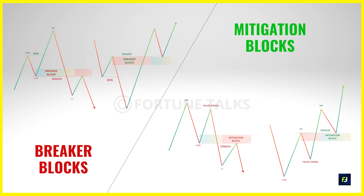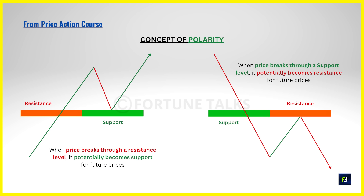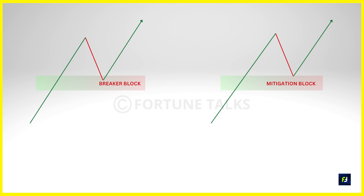Breaker Blocks and Mitigation Blocks are reference areas on charts where you can potentially find a trade opportunity. The Breaker Block and Mitigation Block concepts are almost the same, but their formation pattern is different. The general definition states that a Breaker Block or a Mitigation Block is a failed order block that turns into another supply or demand area on the chart. This is essentially the simple principle of polarity — when price breaks through resistance it becomes support, and vice versa.